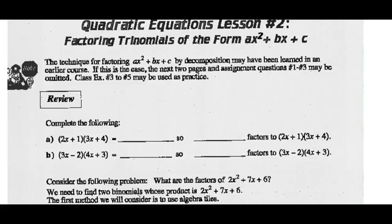Math 20-2. Today we're going to look at factoring trinomials in the form AX squared plus BX plus C, where A doesn't equal 1. We call this method decomposition.